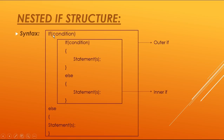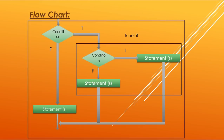Otherwise, by default the else statement will be executed. But if the outer if condition comes false, it will directly by default execute the else statement written for the outer if. Now let us move towards how the nested if structure works.